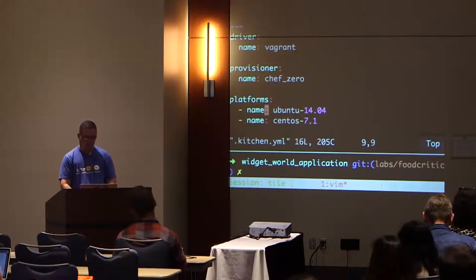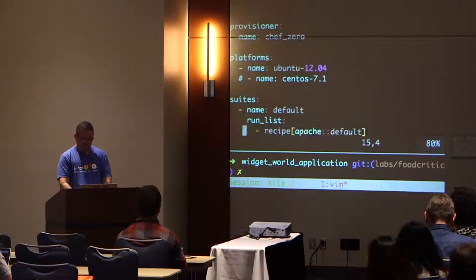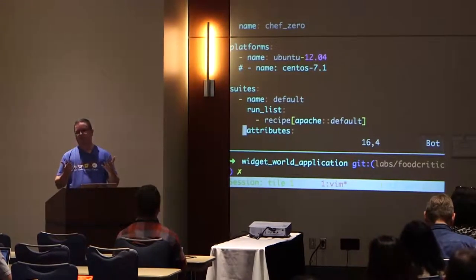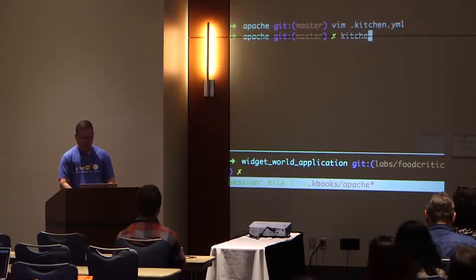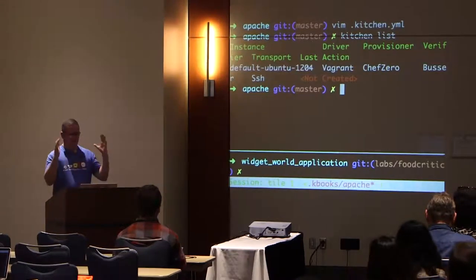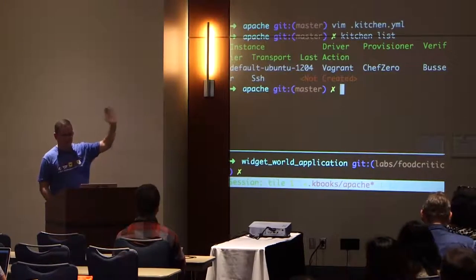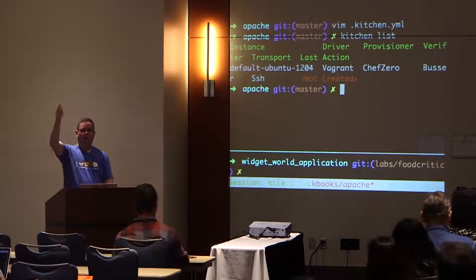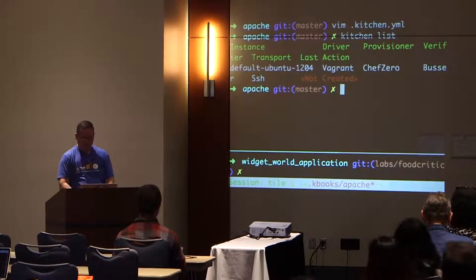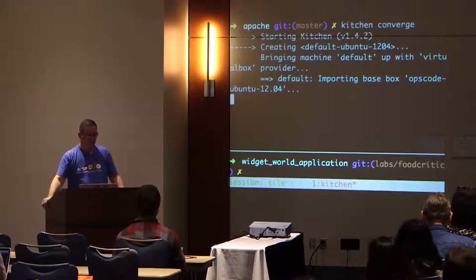Then platforms — which operating systems should I spin up as my virtual machines? I'm going to use Ubuntu 12. And then you have suites — a suite is what recipes you're going to execute in that virtual machine. I'm going to run the default recipe from the Apache cookbook. Running 'kitchen list' shows me I have one instance called 'default-ubuntu-12.04' — the driver is Vagrant, the provisioner is Chef Zero.